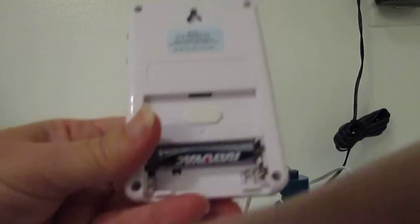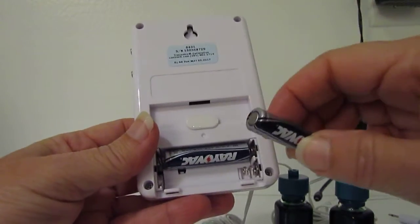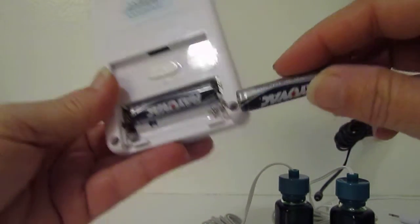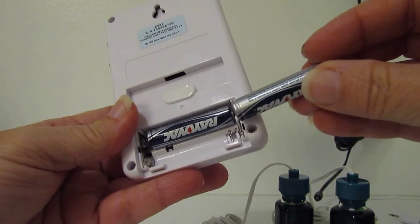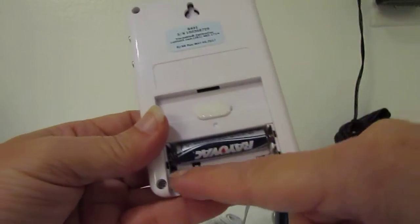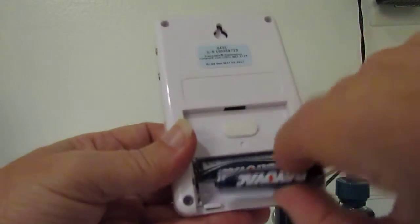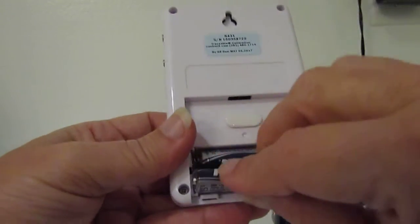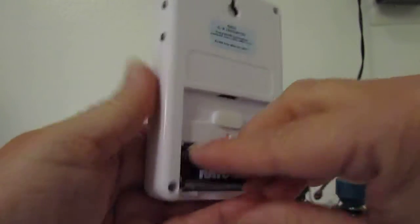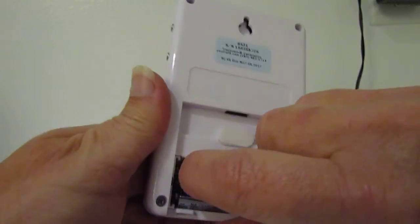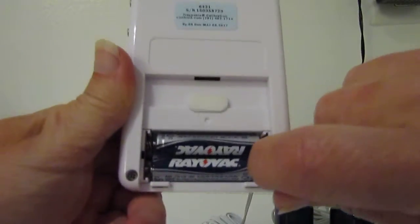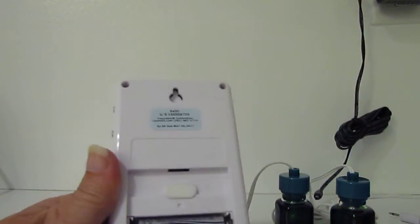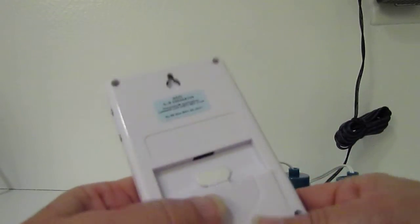It comes with batteries, but the first thing you need to do is - and I've already removed mine so I won't be able to show it to you - there is a little piece of plastic in here that is preventing the battery from operating. It's just a clear piece of plastic stuck in between the contacts for your battery. You just need to remove that and replace the back.